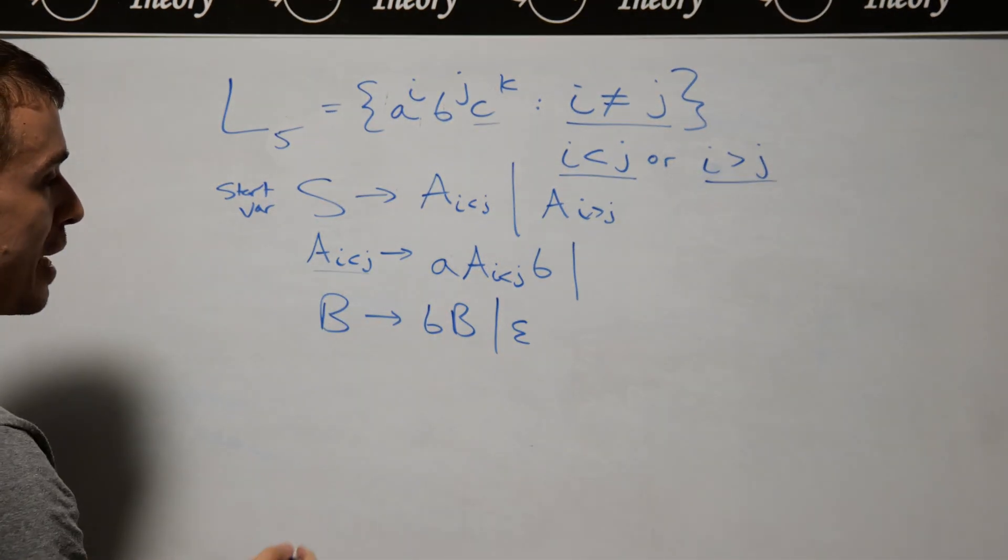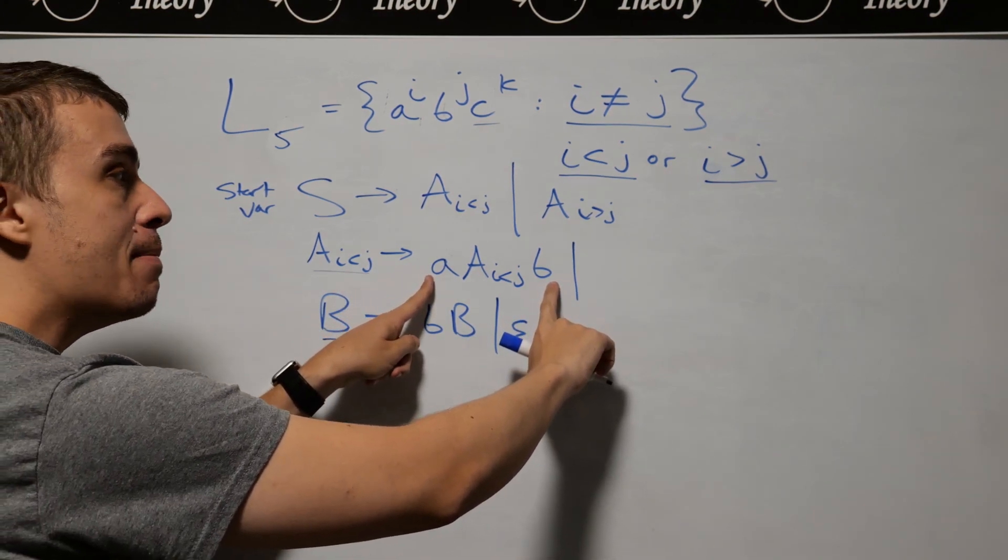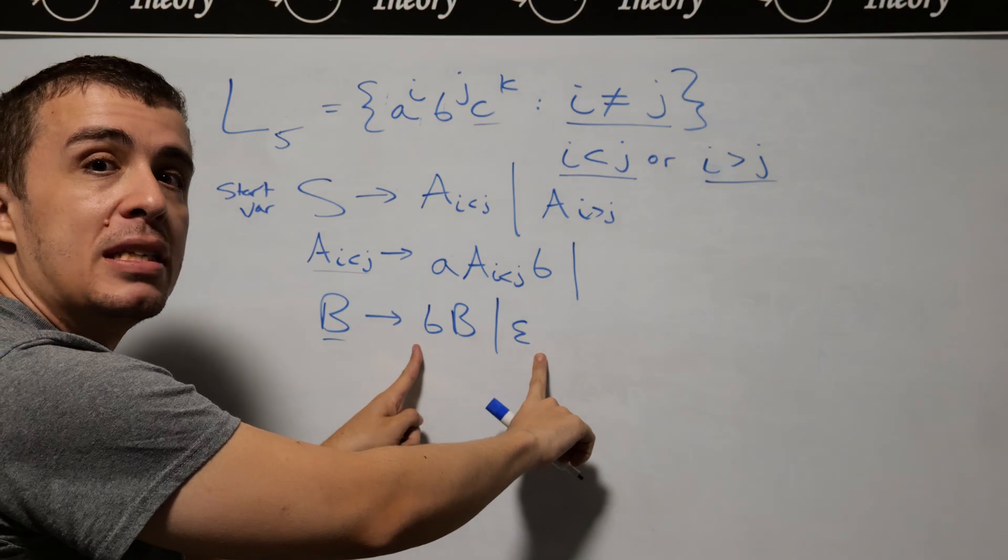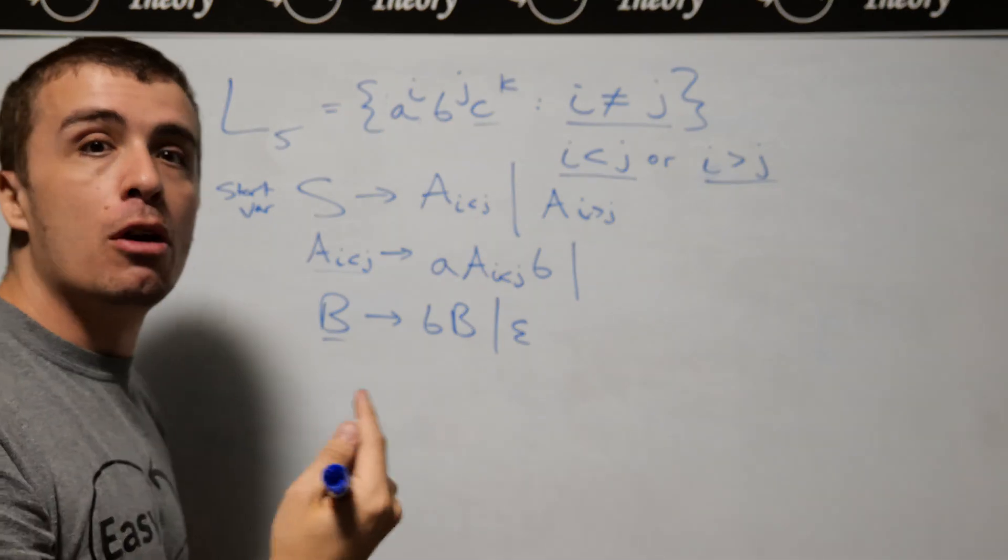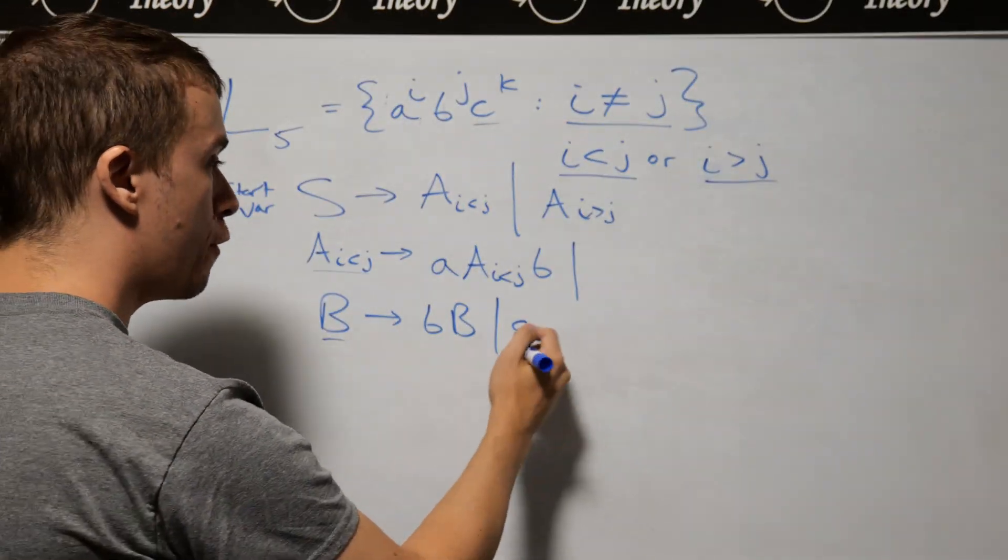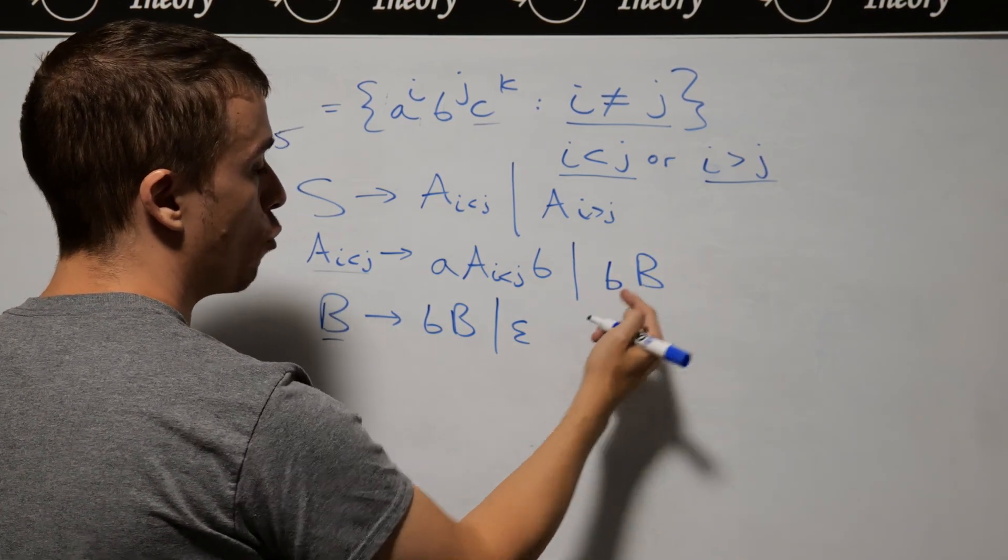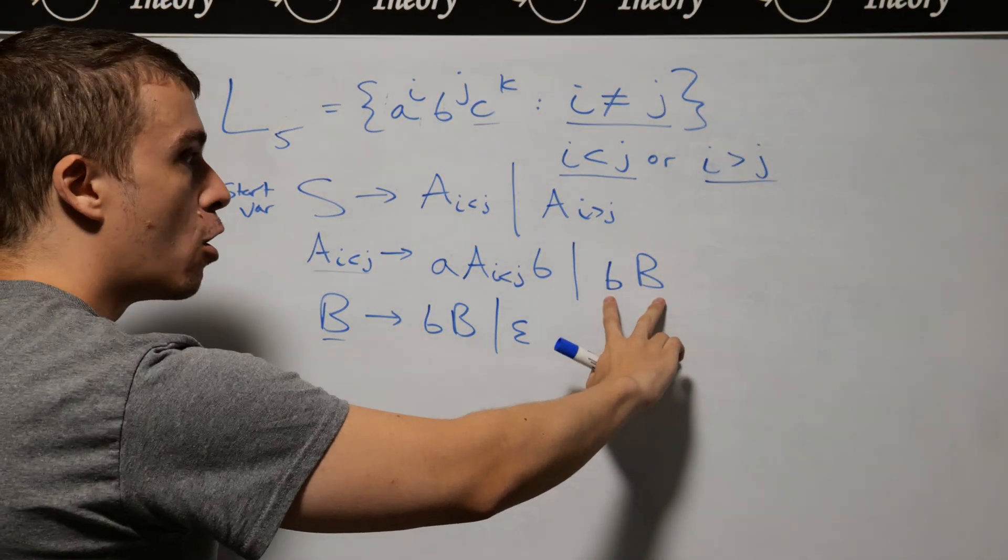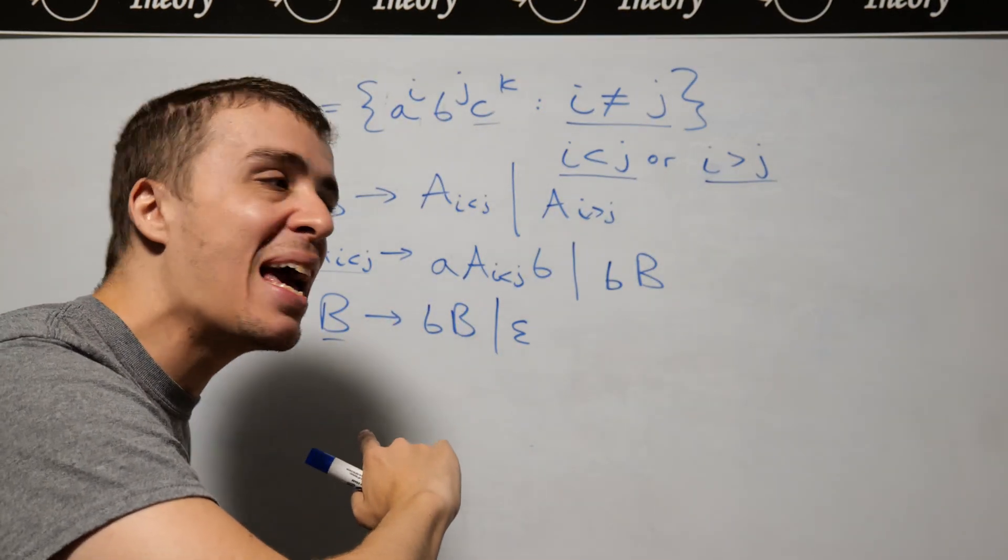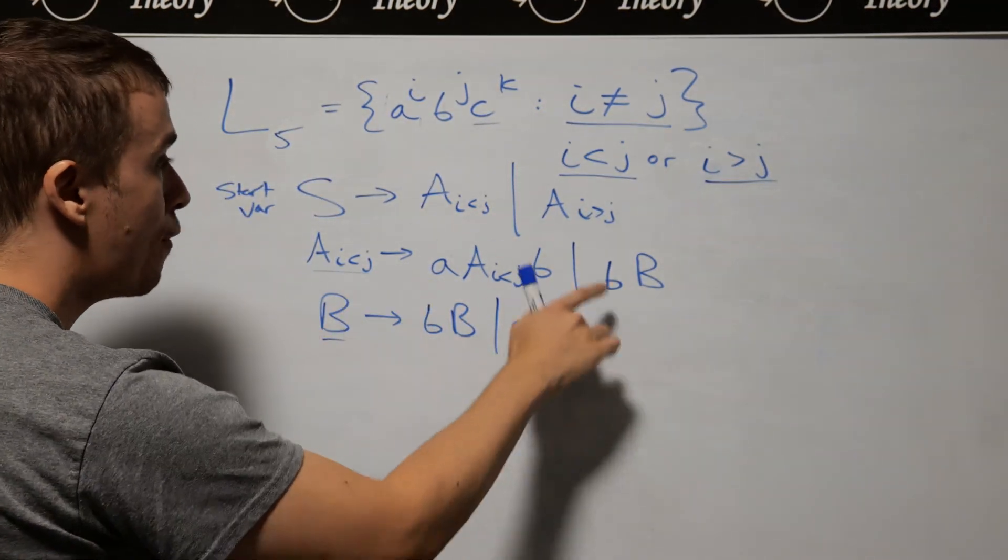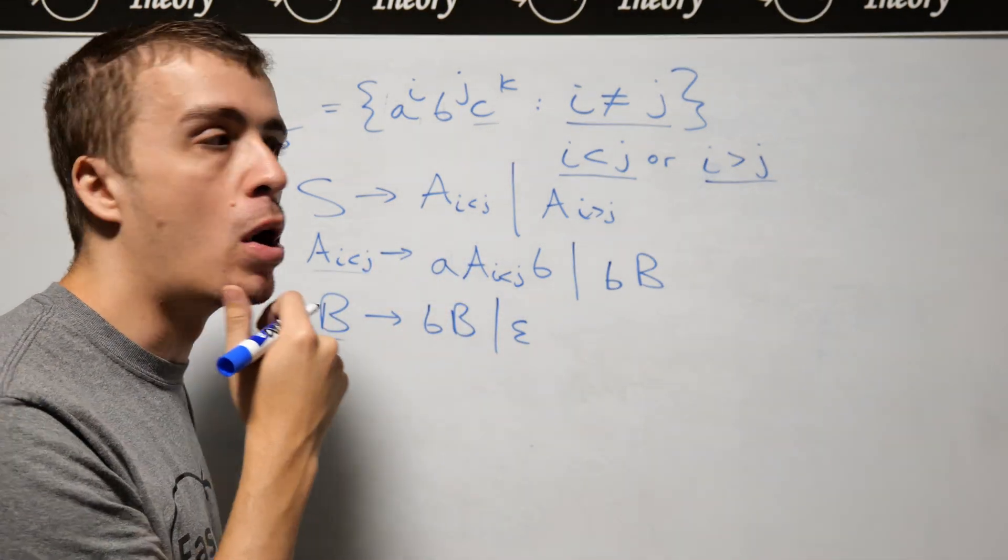How do we relate the A_{i<j} to the B variable? We have the same number here, and B only guarantees at least zero more B's, whereas A_{i<j} must generate at least one more B. Therefore, my rule will be A_{i<j} → A A_{i<j} B B. In order to make a string at all, I must generate at least one B that doesn't correspond to an A. Whenever this makes a string, I must have at least one more B than A, which is exactly what we want.